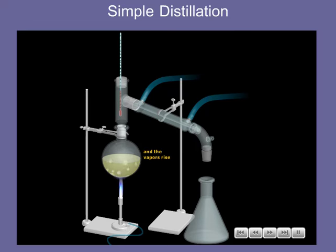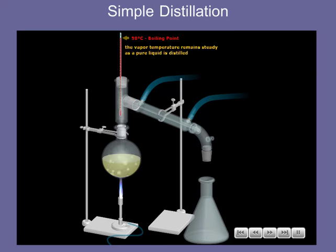Measuring the temperature of the vapors helps us to identify the liquid being distilled and will help to confirm its purity. If the vapors are pure, they will have a constant temperature equal to the boiling point of the liquid being distilled.